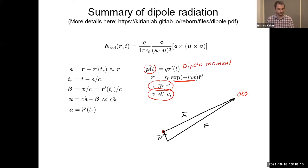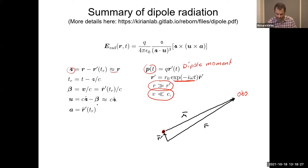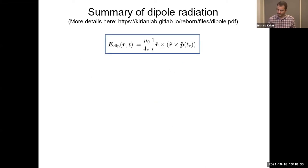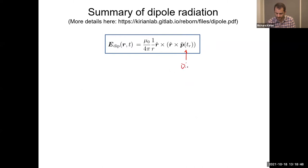Plugging all of those in, the script r now becomes just r — the distance to the detector — and the beta term goes away. Putting it all together, we finally get something clean: the electric field for dipole radiation, written in terms of the second time derivative of the dipole moment p, evaluated at the retarded time, because it takes time for the changing field to be registered by the detector.